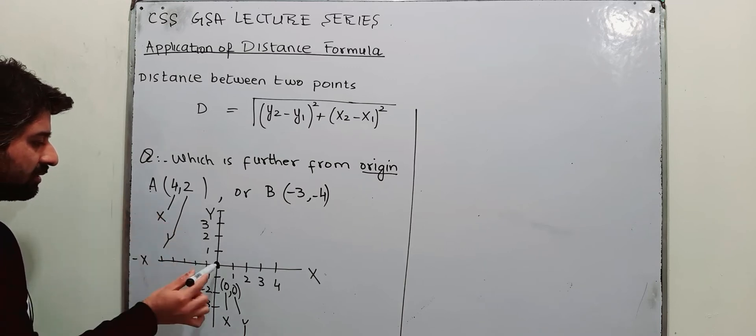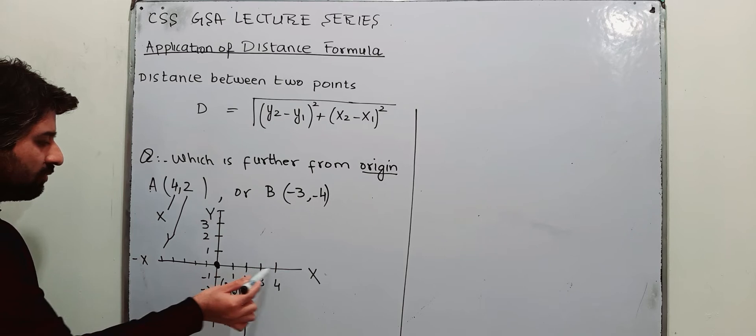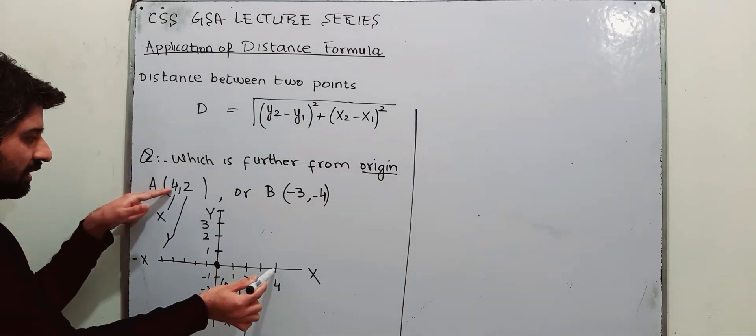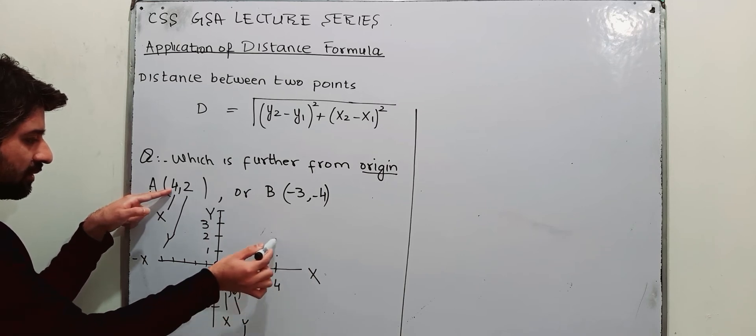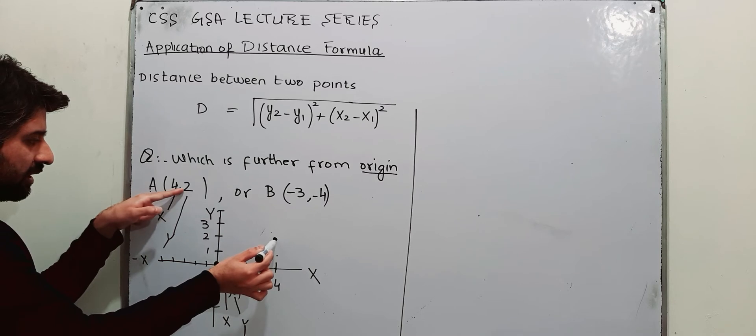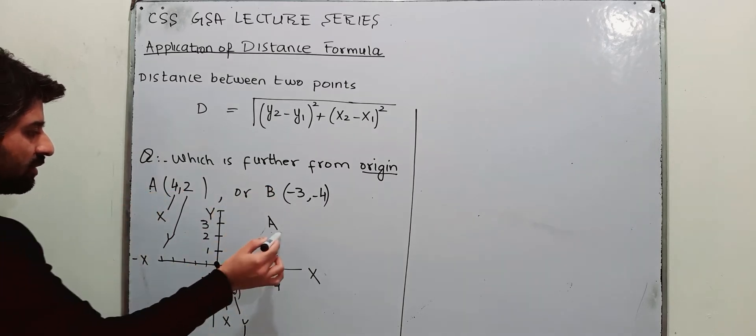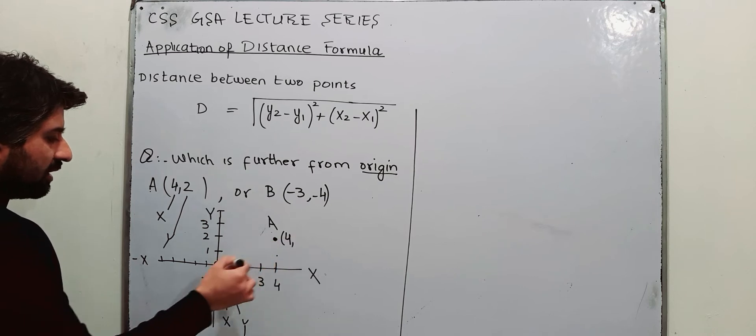So point A is 1, 2, 3, 4 units in x direction, positive x direction, this is right side, and 2 units in positive y direction. So point A will be over here. Its coordinates are 4 units in the positive x and 2 units in the positive y.